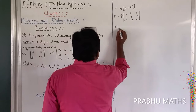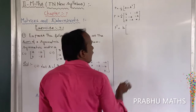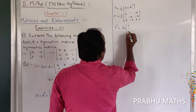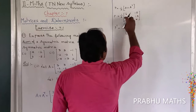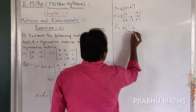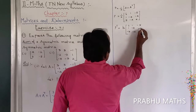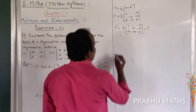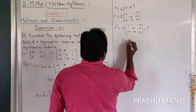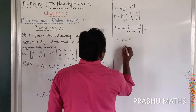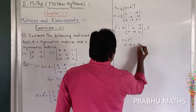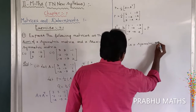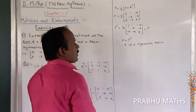Next, find P transpose by interchanging rows and columns. P transpose equals 1 by 2 into: first row 6, 1, minus 5; second row 1, minus 4, minus 4; third row minus 5, minus 4, 4. This equals P. Therefore P equals P transpose, and therefore P is a symmetric matrix.